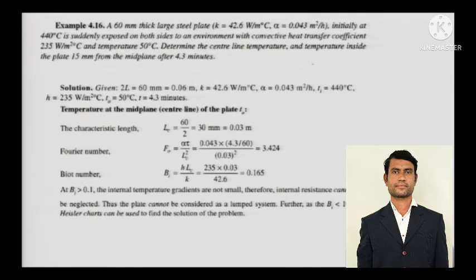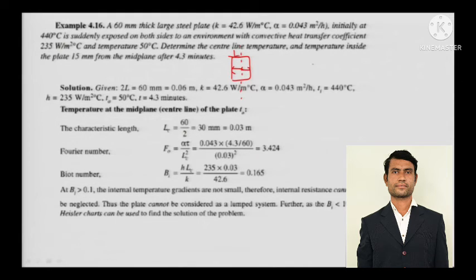A 60 mm thick large steel plate — K and alpha (thermal diffusivity) are given. Initially at 440 degree Celsius, it is suddenly exposed on both sides to an environment with convective heat transfer coefficient and ambient temperature given. Determine the centerline temperature and the temperature inside the plate 15 mm from the mid-plane after 4.3 minutes. The plate is symmetric, so 2L equals 60 mm, meaning L equals 30 mm. Calculate Fourier number as alpha tau by L squared. The Biot number comes out to 0.165.